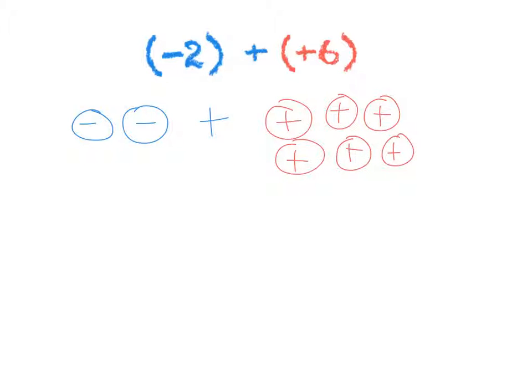And what can I do? I can simply cross them out in pairs. One red, one blue, one blue, one red. What am I left with? I'm left with four positive counters which means my answer is going to be positive four because that's how much I have left over.